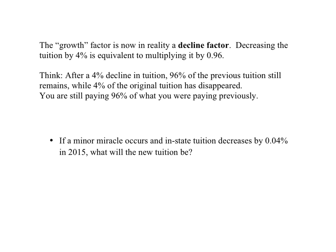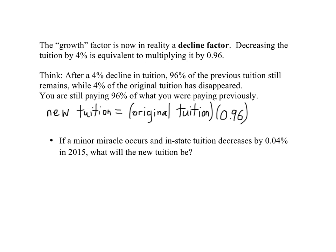What we've been calling a growth factor is now, in reality, a decline factor. Decreasing the tuition by 4% is equivalent to multiplying by 0.96 — a number a little bit less than 1, which is the result of computing 1 minus 0.04. After a 4% decline, 96% of the previous tuition still remains while 4% has disappeared. So you're still paying 96% of what you were paying previously, hence the 0.96.